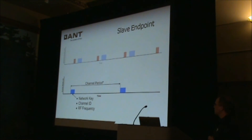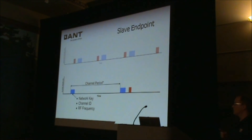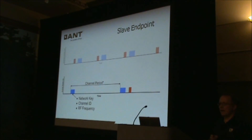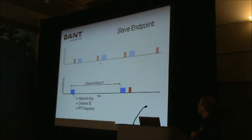To synchronize and find the master's transmissions, the slave needs to know the network key, ideally the channel ID (which can be wildcarded), and the appropriate RF frequency. If the slave has data to send, it can do so immediately after receiving data from the master. The slave only sends data when required — it queues the data in the ANT chip, which transmits it back to the master immediately after the next received packet.